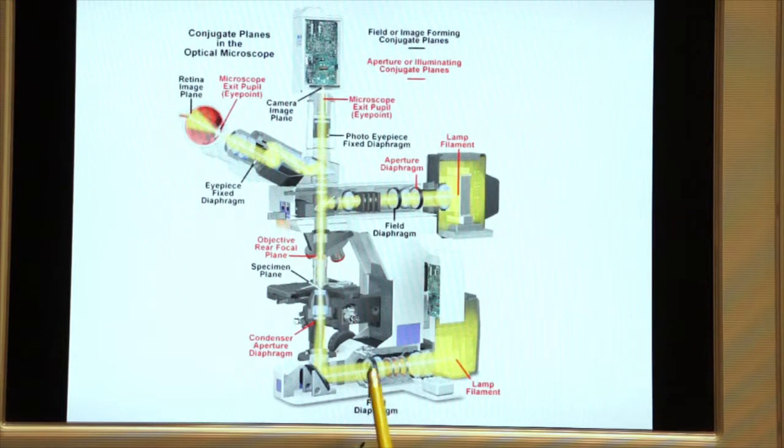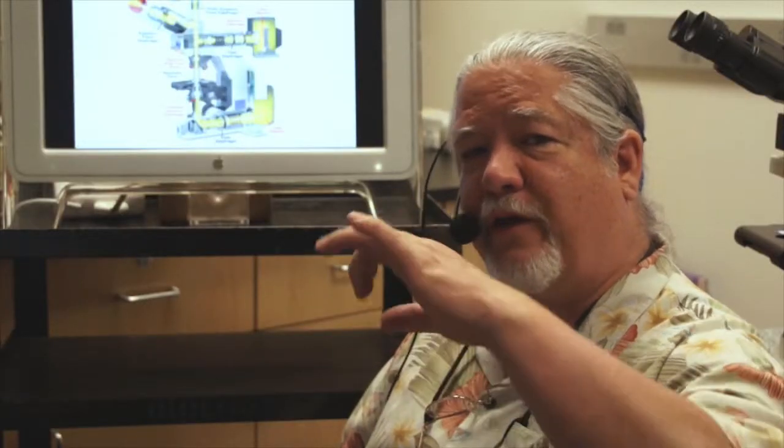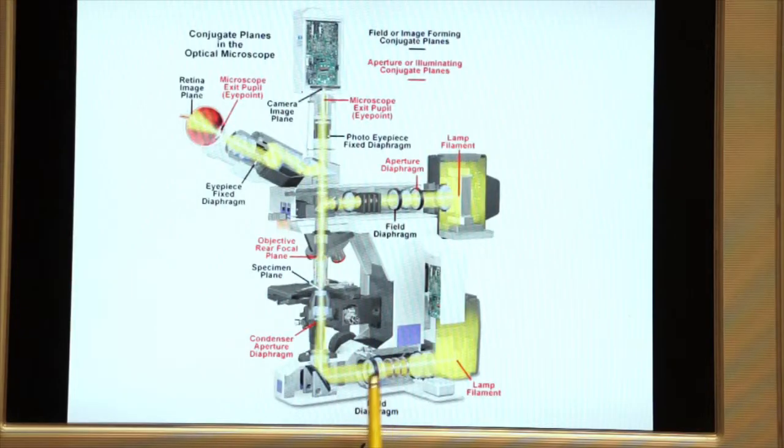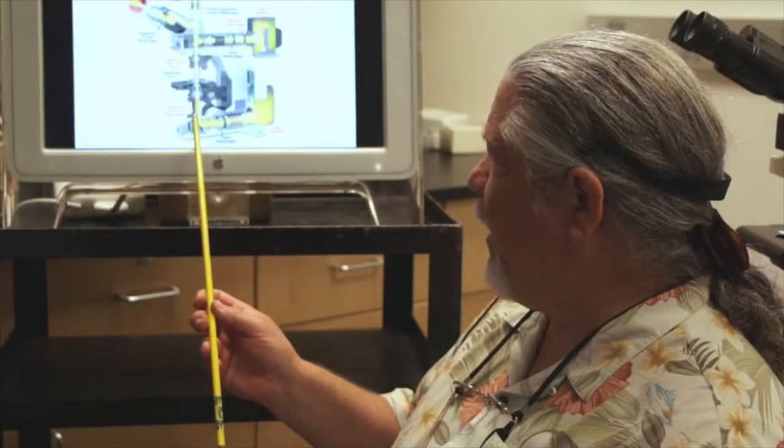Here you see it traveling through the field diaphragm. Remember that the field diaphragm is the diaphragm that we can close down and see it in the field of view. That's why we called it a field diaphragm. The light then travels through the field diaphragm and is reflected off a right angle mirror and it leaves the base.